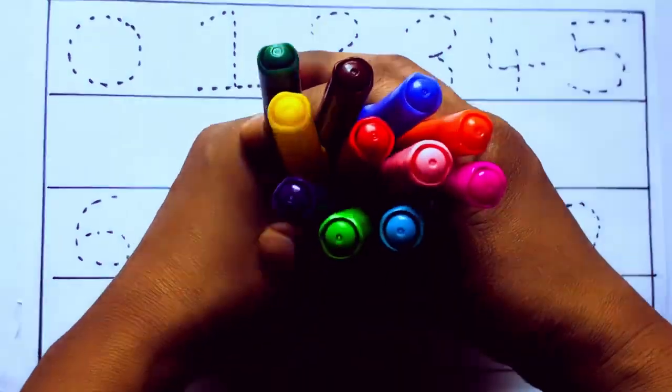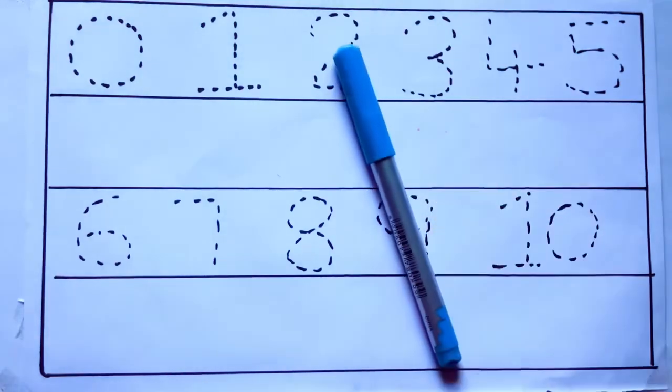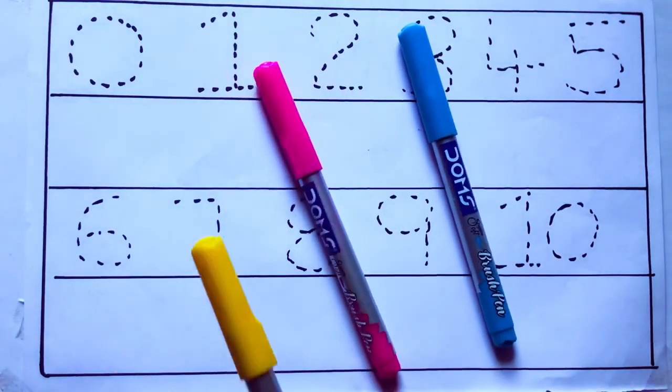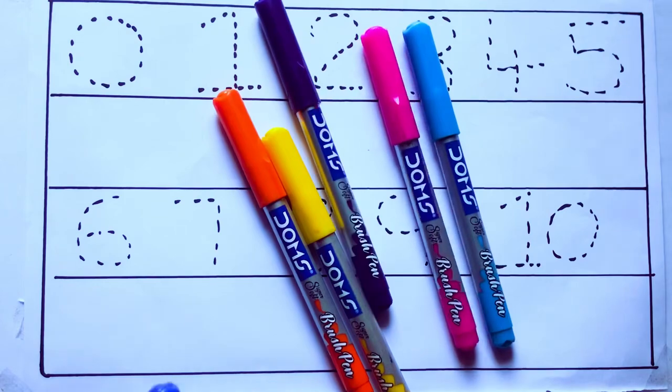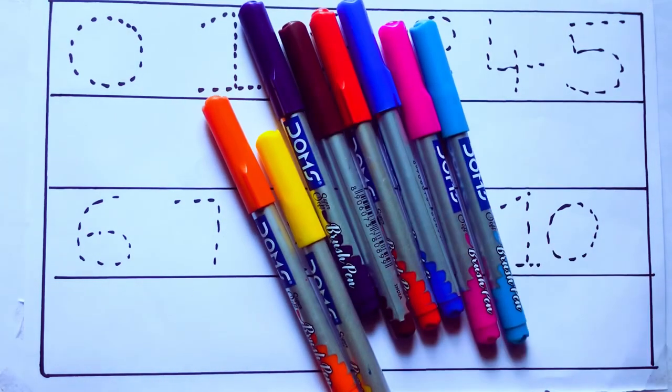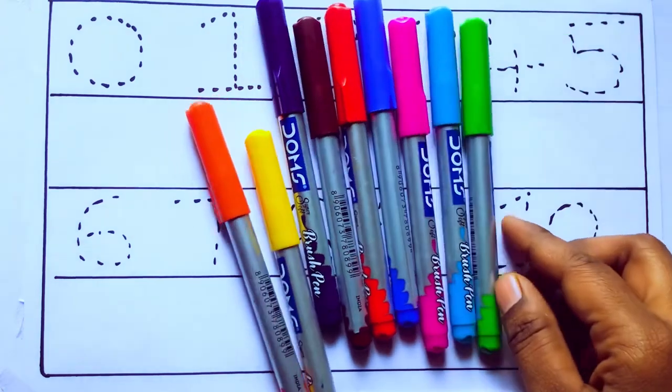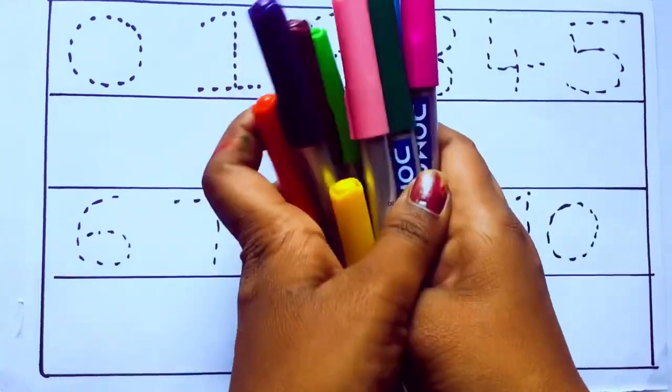Let's learn some colors. These are all the color pencils. Let's learn the names. Sky blue color, pink color, yellow color, orange color, violet color, blue color, brown color, red color, green color, and pink color.